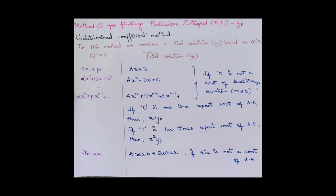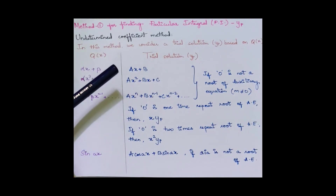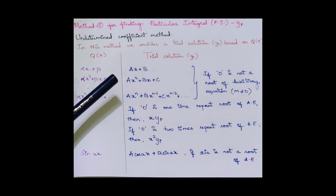In the undetermined coefficients method, we consider a trial solution based on the type of q(x) given in the question. If q(x) is a linear polynomial of the form alpha·x plus beta, then the trial solution will be ax + b. If it's alpha·x² + beta·x + gamma, then it's ax² + bx + c, and so on.